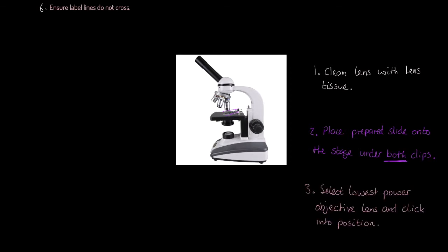Thirdly, we're going to select the lowest power objective lens and click that into position. Because it's the lowest power, it's likely to be the four times magnification lens that you're going to use first.